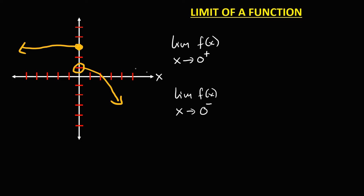And this is y. Then from this graph, since the coordinate is on the y-axis, x is equal to 0. For x approaching 0 from the right — this is 0 from the right — the limit is equal to positive 1.